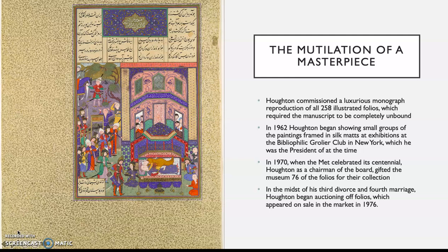In 1962, Houghton put a small group of the paintings, now framed in silk mats, on exhibit at the bibliophilic Grolier Club in New York, of which he was president at the time. These exhibitions were strategic — happening at a time when Middle Eastern, especially Persian works, were in very high demand. In 1970, when the Met celebrated its centennial, Houghton, who was chairman of the board, donated 76 of the pages to their collection.